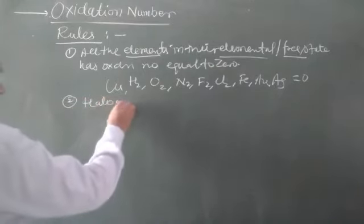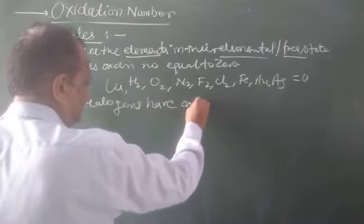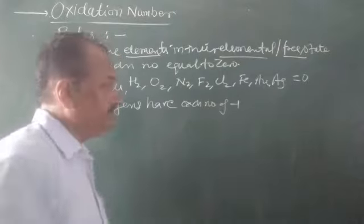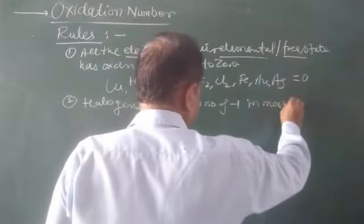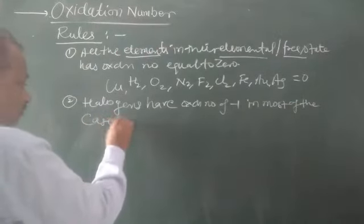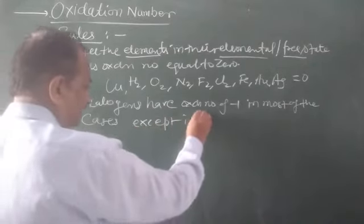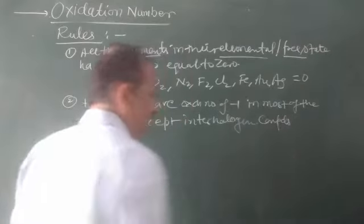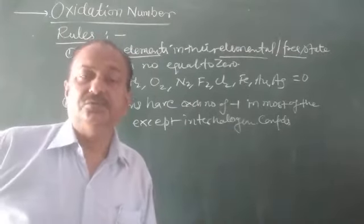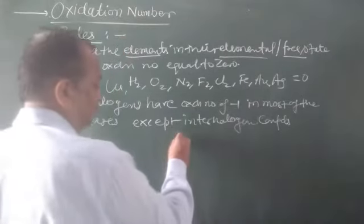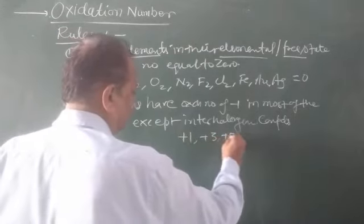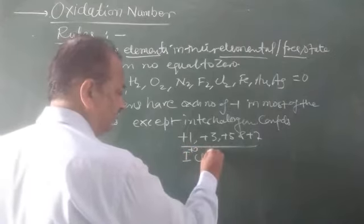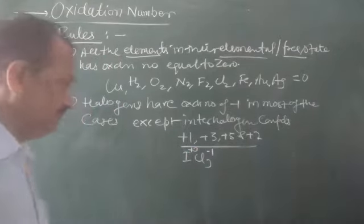The second point: halogens have an oxidation number of minus one because they gain one electron in most cases, except in inter-halogen compounds. Inter-halogen compounds are compounds formed by two different halogens, where they can have plus one, plus three, plus five, or plus seven, like ICl₃ where iodine has plus three.